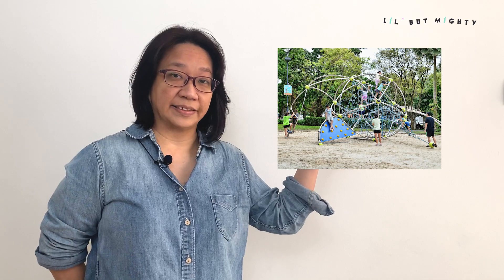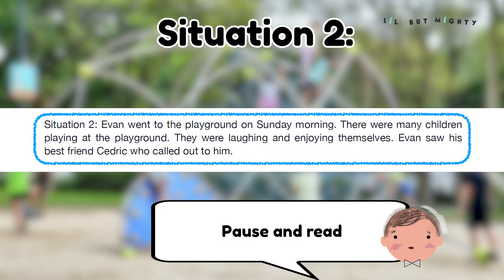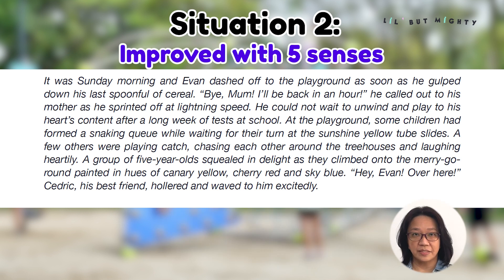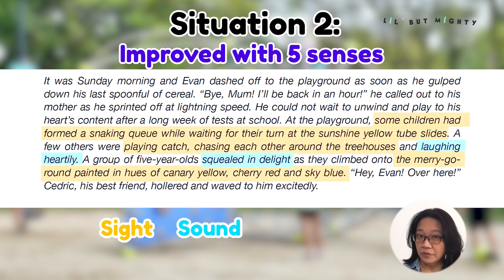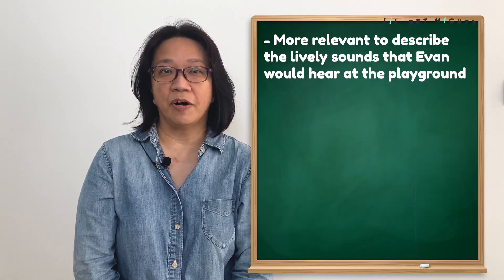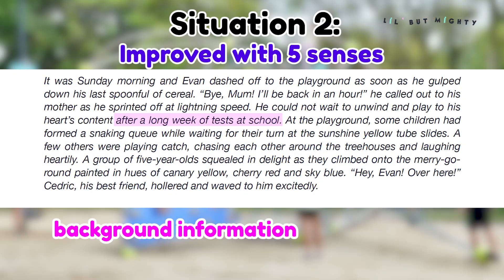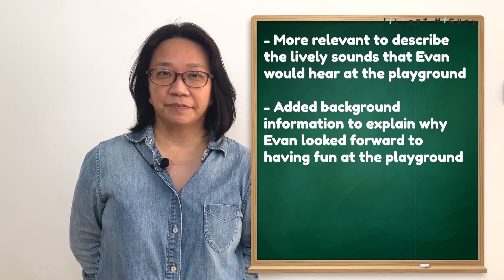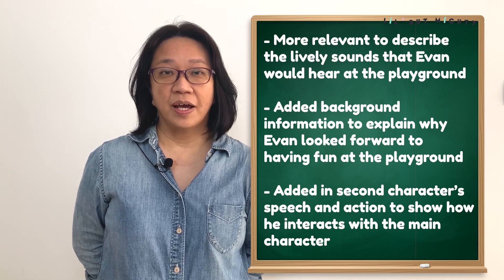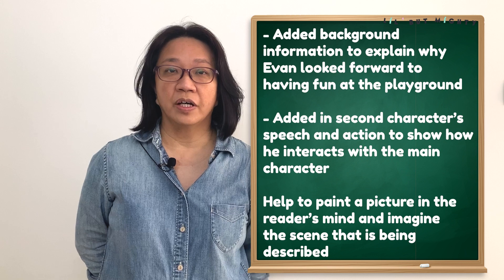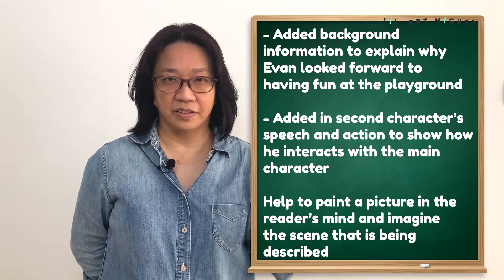Now, let's look at another example. This time, instead of the canteen, let's imagine our character is now at the playground. Can you identify the five senses used in this example? Notice that I have used the sense of sight and sound instead of smell. This is because it will be more relevant to describe what Evan can hear at the playground. Additionally, I have also added some background information to explain why Evan was having so much fun at the playground. To wrap up the descriptive paragraph, I have added in the second character's speech and actions to show how he interacts with the first character. Doing this will help to paint a vivid picture in the reader's mind and help him to visualise how the scene would look like.